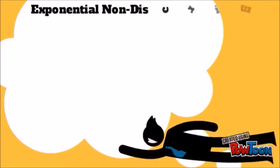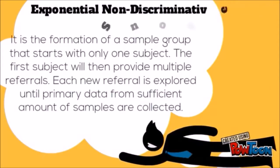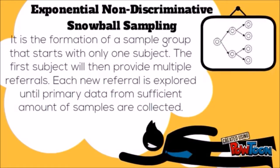The second pattern is Exponential Non-Discriminative Snowball Sampling. It is the formation of a sample group that starts with only one subject. The first subject will then provide multiple referrals. Each new referral is explored until primary data from a sufficient amount of samples are collected.